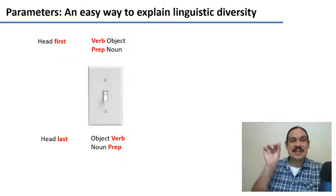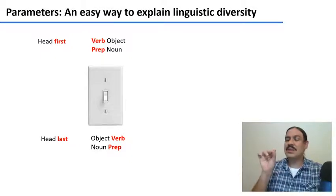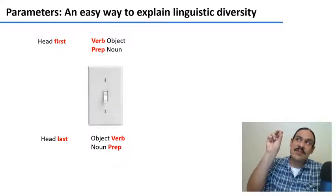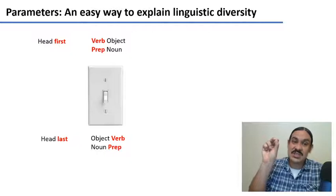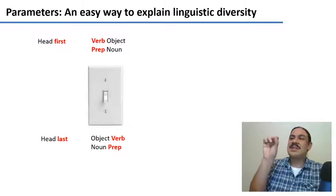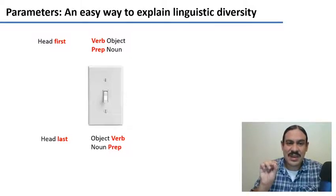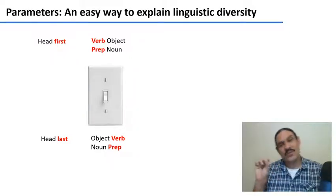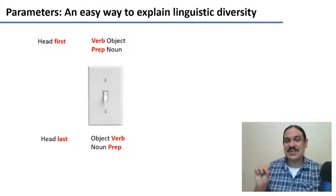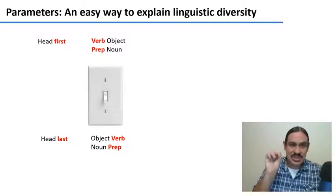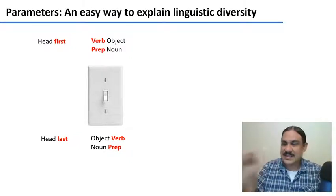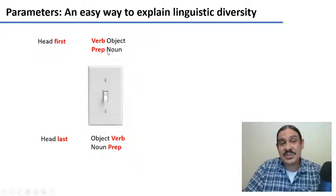Think about this like a light switch. You can have your brain determine that the heads go first, in which case your language would have verbs and objects or prepositions and nouns. If you had the switch on the other direction with the head last, you would have object, verb, and noun prepositions, which are called postpositions in such languages. So you can see that with a little switch of one position versus the other, head first or head last, this would have a lot of ramifications. It would tell you that the verbs and the objects have a certain configuration and the prepositions and nouns have certain configurations.